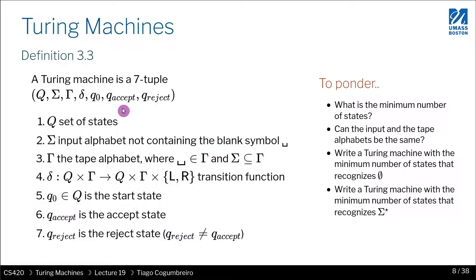We also have an initial state, which is the start state. We have an accept state, which must be different than the reject state. And we say nothing about the dependency between these two, so Q0 could potentially be Q accept, and it could also be Q reject.